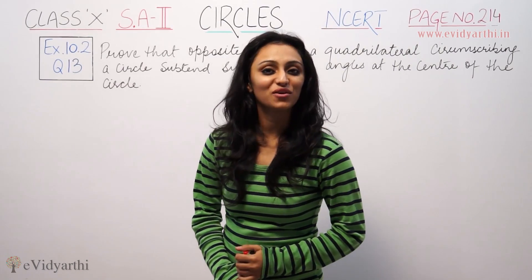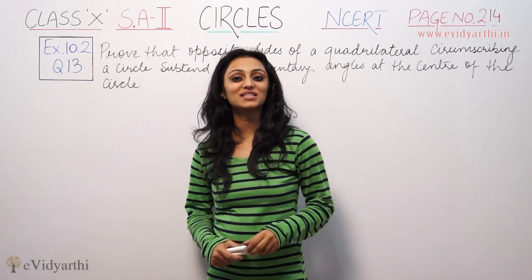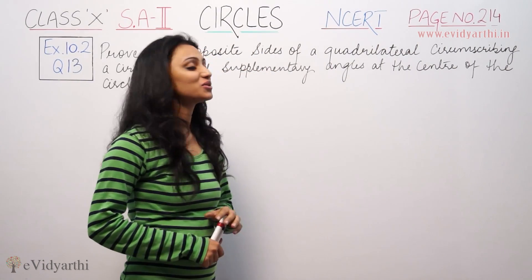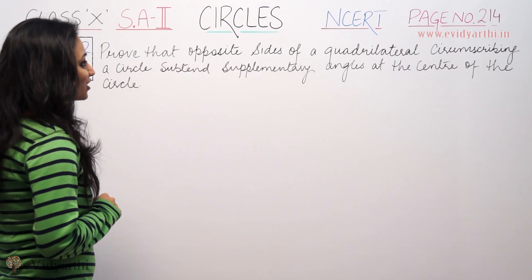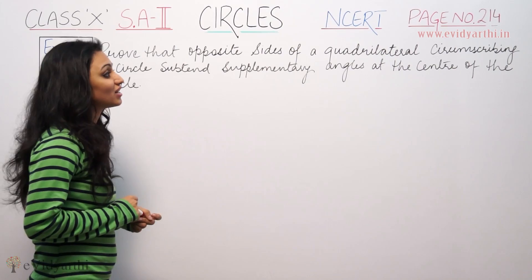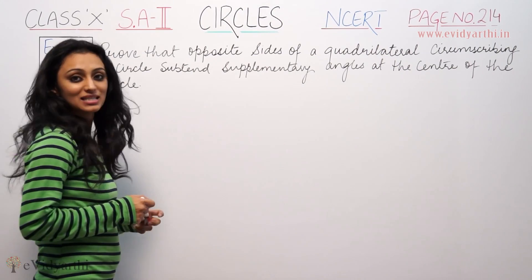Hey what's up, this is Vishku with another question of circles. This is question number 13, exercise 10.2, page number 214. Prove that opposite sides of a quadrilateral circumscribing a circle subtend supplementary angles at the center of the circle.